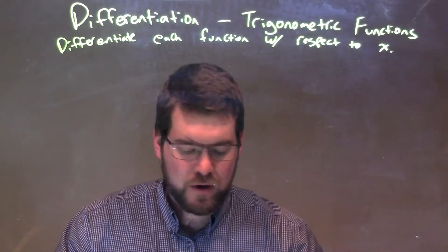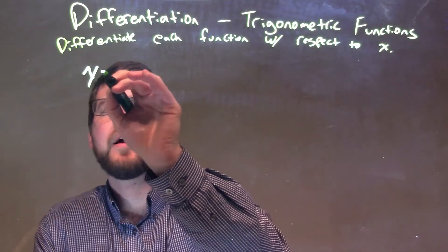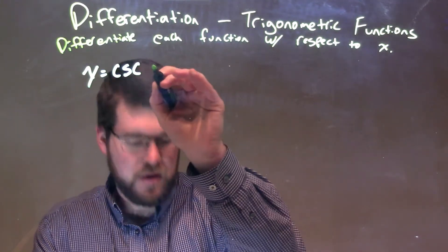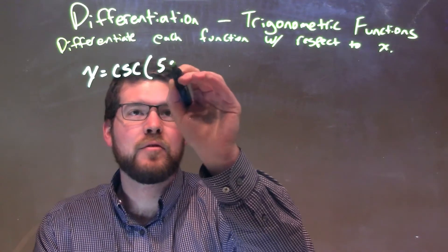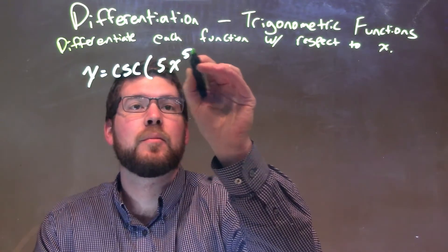So, if I was given this function, y equals cosecant of 5x to the 5th power.